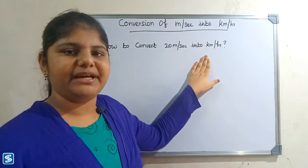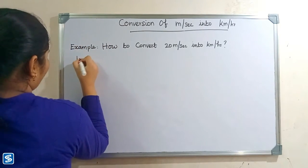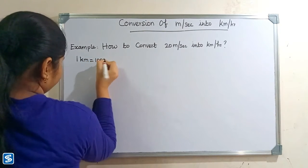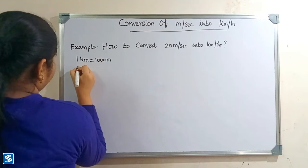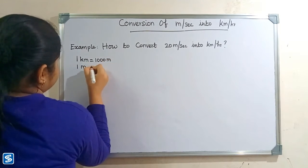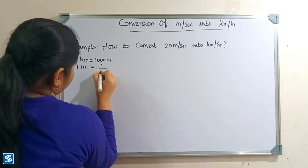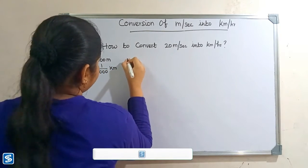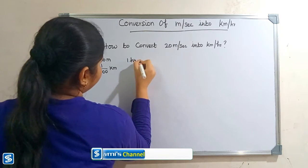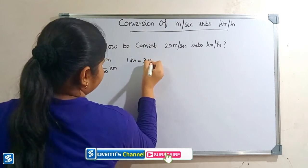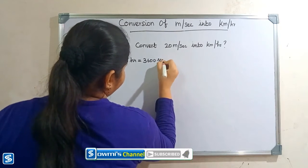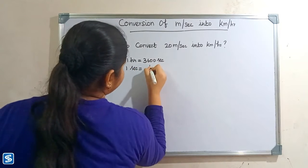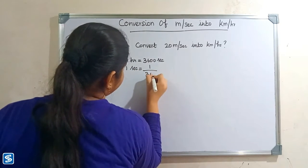We already know that 1 kilometer is equal to 1000 meters, so 1 meter is equal to 1 by 1000 kilometers. 1 hour is equal to 3600 seconds, so 1 second is equal to 1 by 3600 hours.